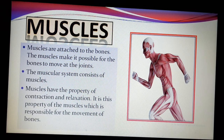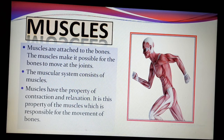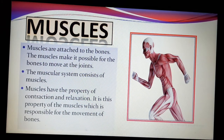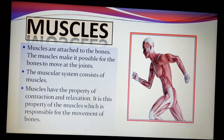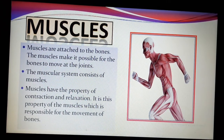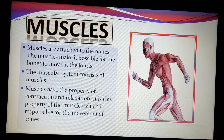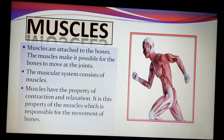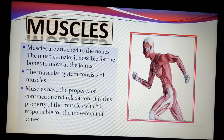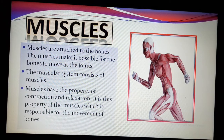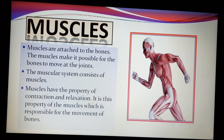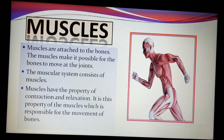Bones are very hard structures of our body. They are hard and they give the framework — that is, they form the skeleton for our body. Bones can only move at the places where joints are present. It is actually the muscles that help bones to move. Muscles are attached to the bones, and our body has many muscles. The muscles make it possible for the bones to move at the joints. So if we don't have muscles in our body, we will not be able to move our body parts.